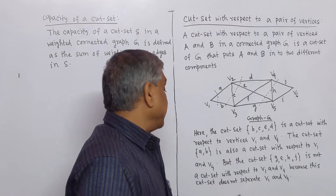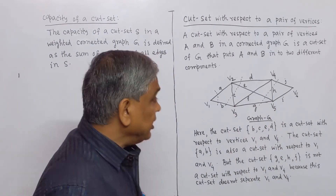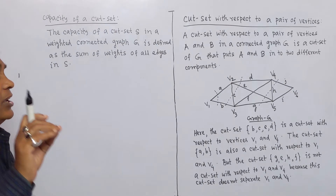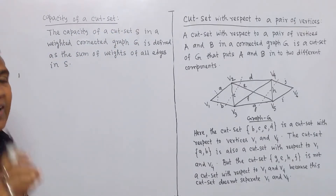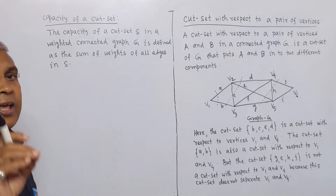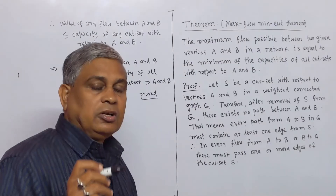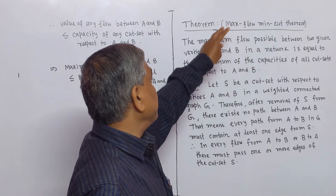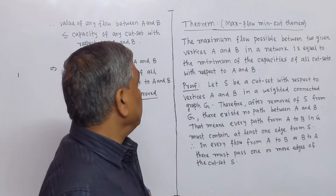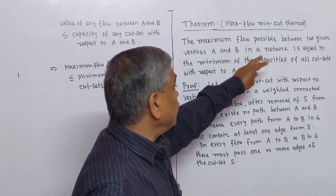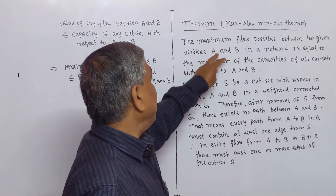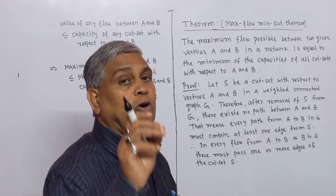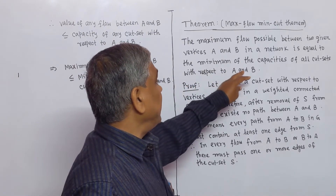That is, this cut set does not separate V1 and V4. We now define the capacity of a cut set: the capacity of a cut set S in a weighted connected graph G is defined as the sum of the weights of all edges of the cut set S. We now prove the Max Flow Min Cut Theorem: the maximum flow possible between two given vertices A and B in a network is equal to the minimum of the capacities of all cut sets with respect to vertices A and B.